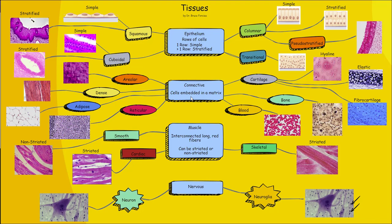Moving on to connective tissue, which is a pretty big category. We have the primary connective tissues, which are areolar, dense, adipose, and reticular. And the special connective tissues, which are cartilage, bone, and blood. Areolar connective tissue is very disorganized, sometimes called fascia. Dense connective tissue is more organized with rows of cells, found in ligaments and tendons. Adipose connective tissue has adipocytes, which contain lipid or fat. And reticular connective tissue contains branching reticular fibers found in the lymphatic system.